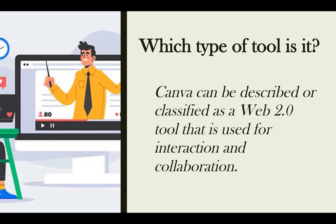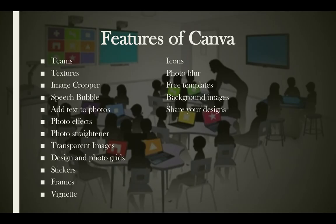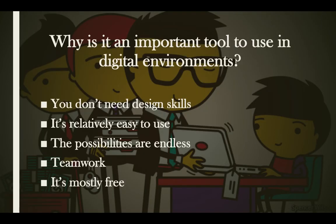The next question is: which type of tool is Canva? Canva can be classified as a Web 2.0 tool, and as we know, Web 2.0 tools are used for interaction and collaboration. Features of Canva include teams, textures, image cropper, speech bubble, adding text to photos, editing and formatting photos, photo straightener, transparent images, design and photo grids, stickers, frames, vignette, icons, a flow blur for photos, access to thousands of free templates and background images, and the ability to share your design with other users.